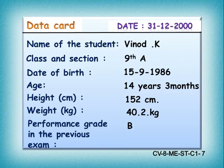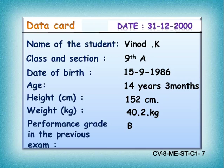Do you remember that your teacher gave each of you an information sheet? Here is one such sheet, called the data card. It shows information about a student named Vinod K: date 31-12-2000, class 9th A, date of birth 15-9-1986, age 14 years 3 months, height 152 centimetres, weight 40.2 kg, and performance grade B in the previous exam.